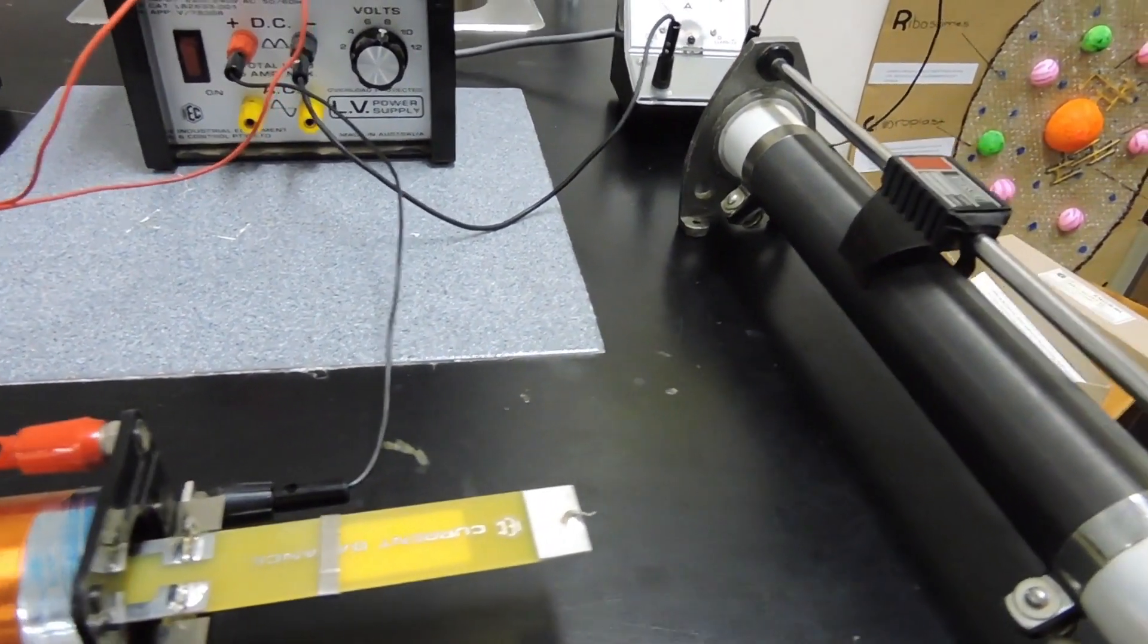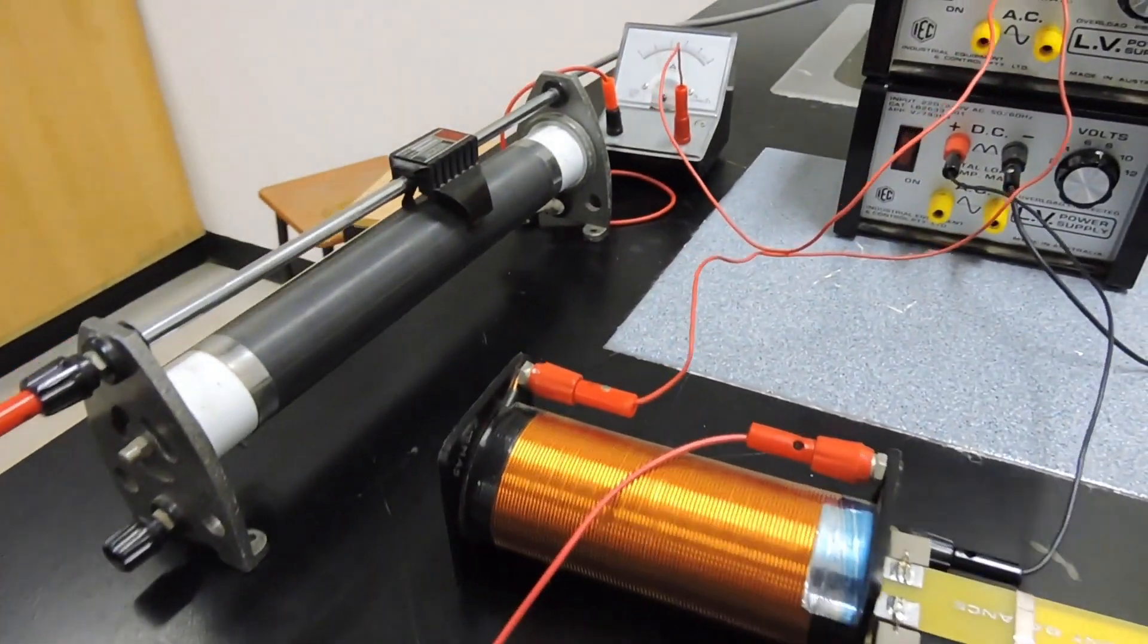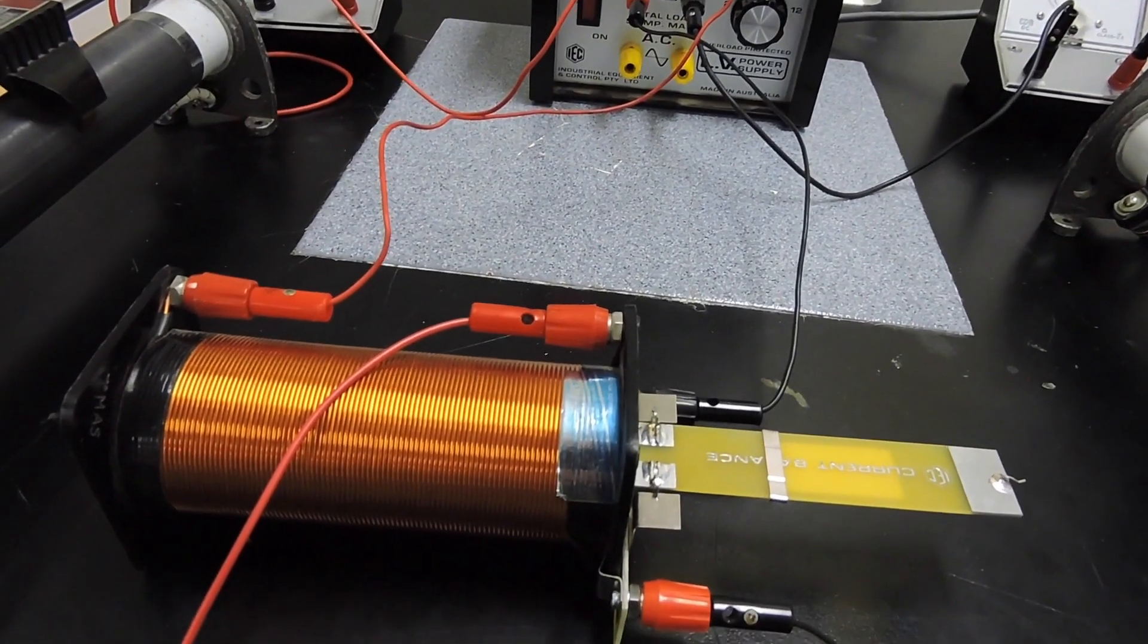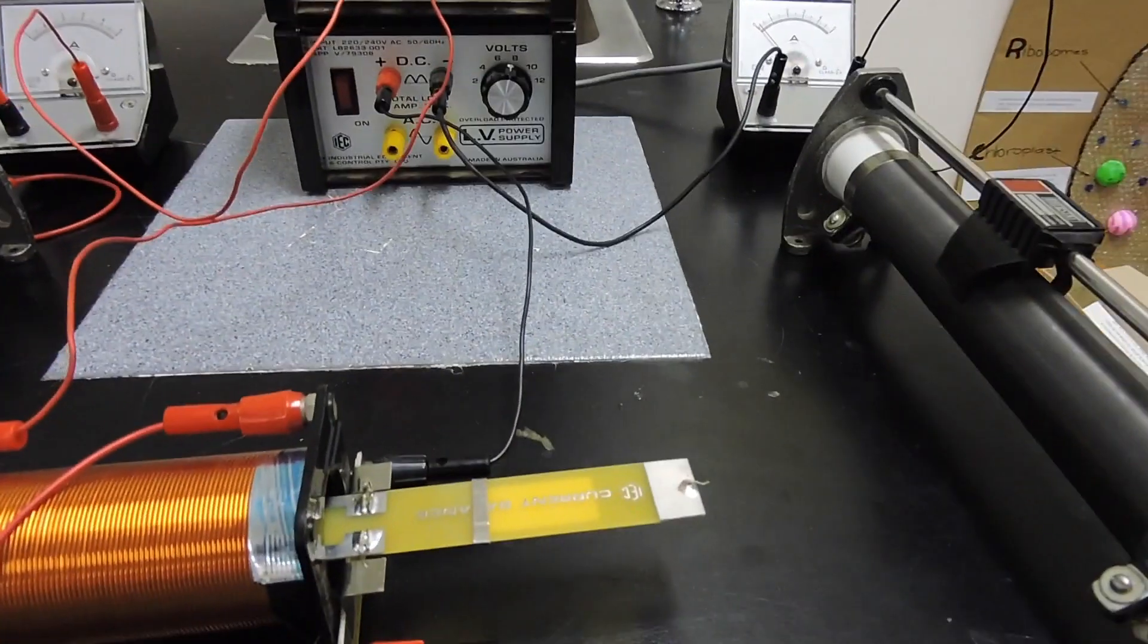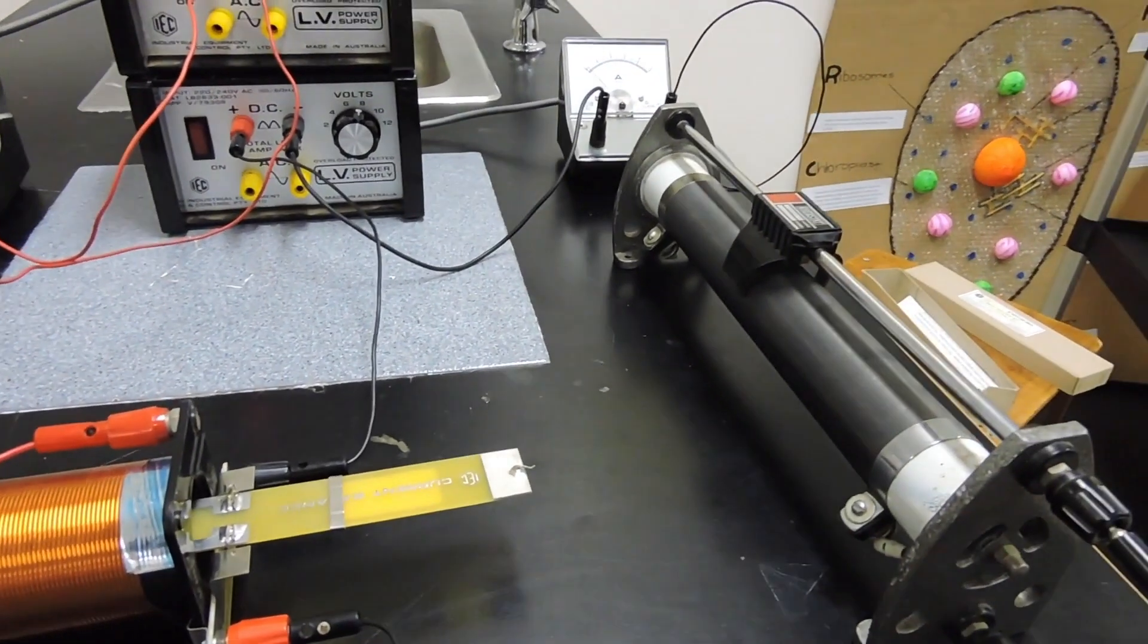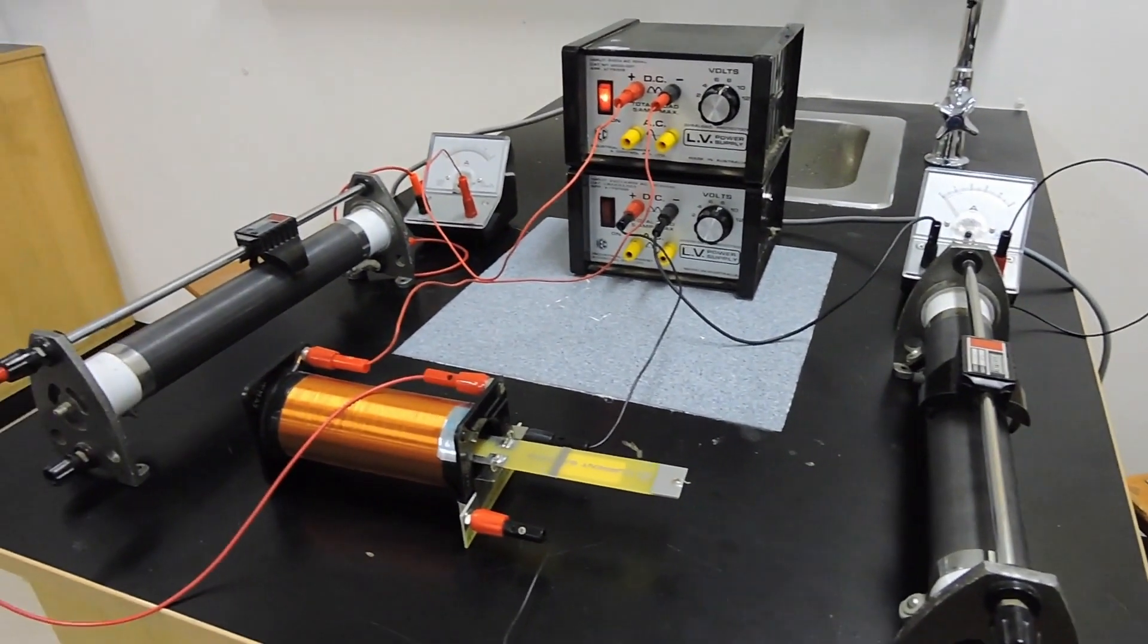Then you can use F=BIL to work out the force. You can then also work out B using your solenoid formula to work out the magnetic field strength, and thereby you can work out the mass of your staple. I hope that helps you work out the current balance.